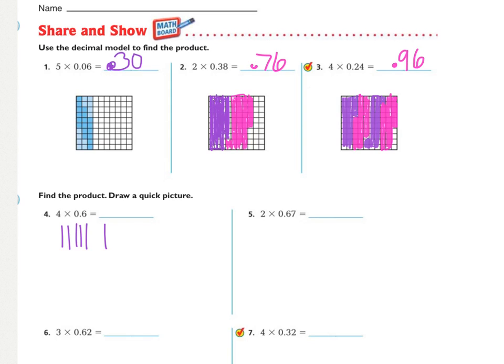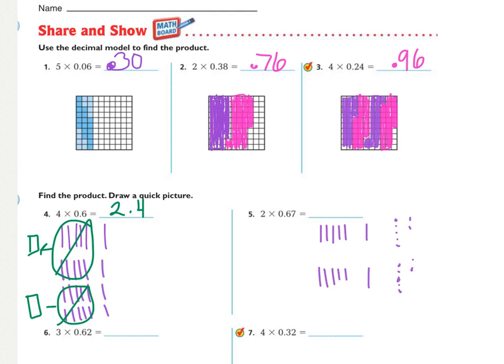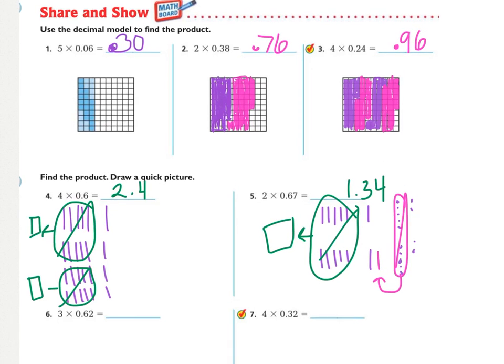On number four, I told you four groups of six tenths. Draw a quick picture and regroup those. I ended up with two wholes and four tenths left over. Number five should be two groups of sixty-seven hundredths. If you regrouped correctly, you should have ended up with the answer of one whole and thirty-four hundredths.